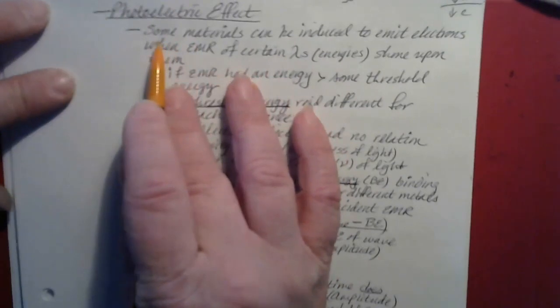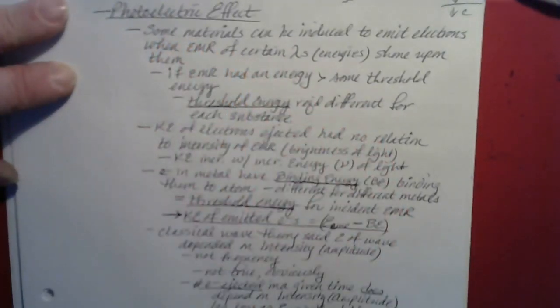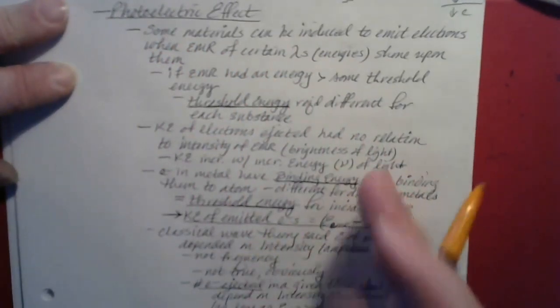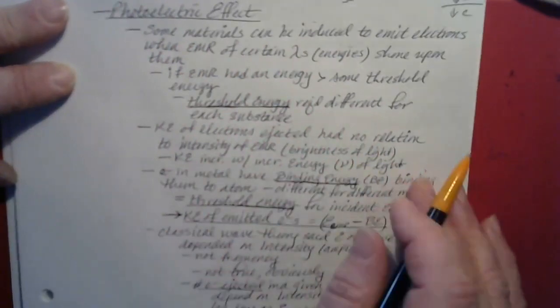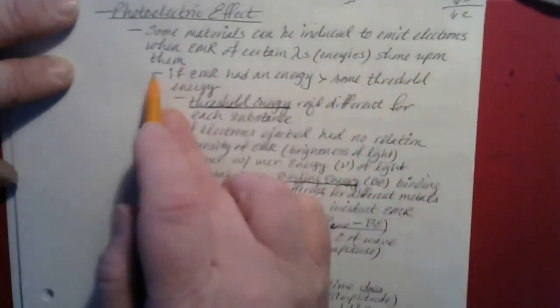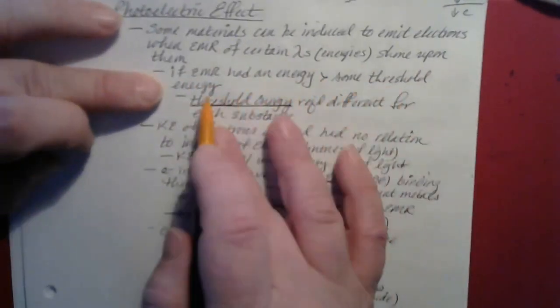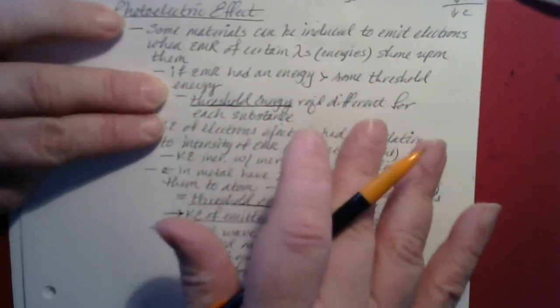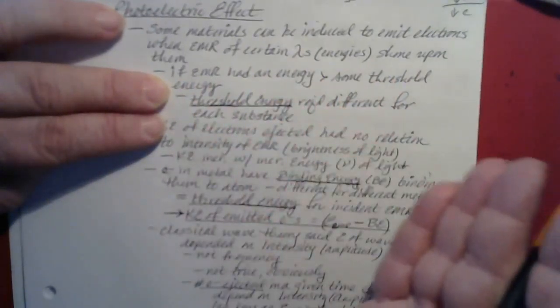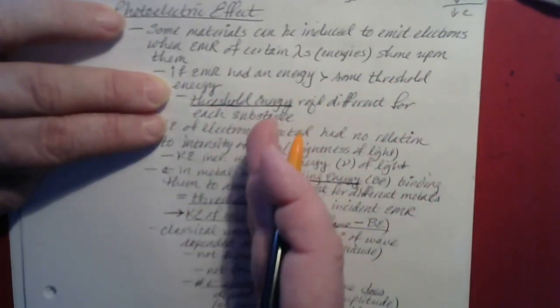The photoelectric effect is seen when electromagnetic radiation of sufficient energy is shown upon the surface of certain substances. Those substances can be caused to emit electrons. This happens if the electromagnetic radiation has an energy greater than some threshold energy. For each given substance, there's a minimum energy the radiation must have to cause the release of electrons. If the energy is lower than the threshold, nothing happens; at or above it, the substance emits electrons. That's known as the photoelectric effect.